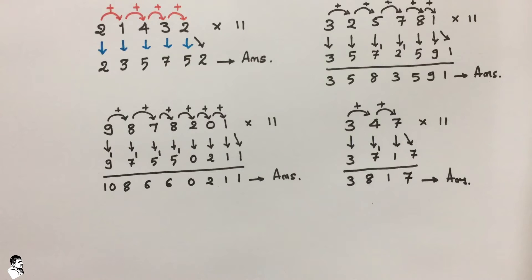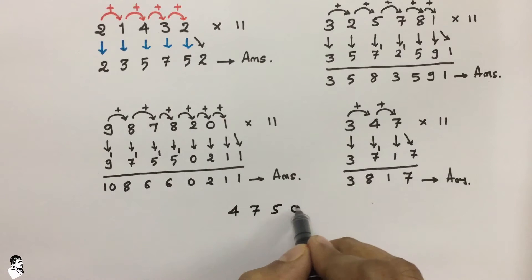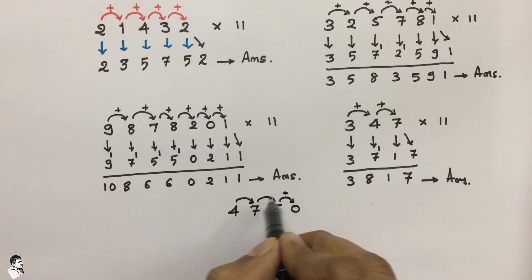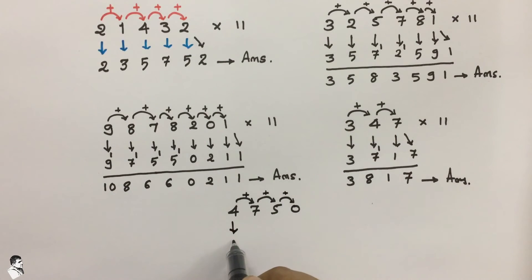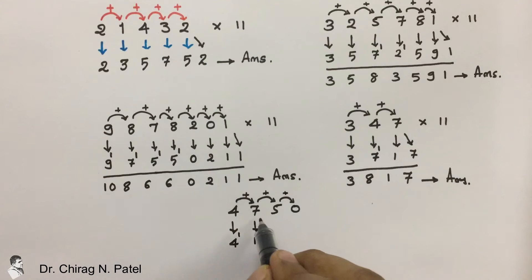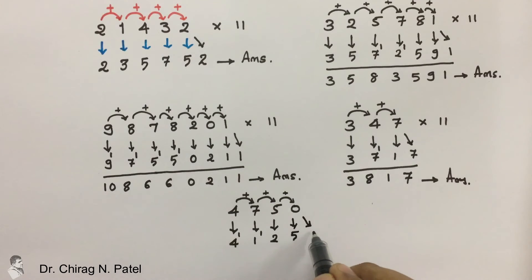This is the method by which you can multiply any number with 11. Let us take one more: 4750 multiplied by 11. We again sum each value with its next. Write down 4 as it is, then 7 plus 4 is 11, so 1 carries over. Then 7 plus 5 is 12, so 2 is here and 1 carries over.